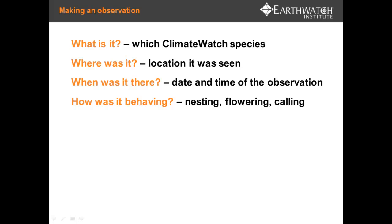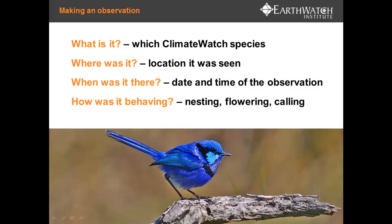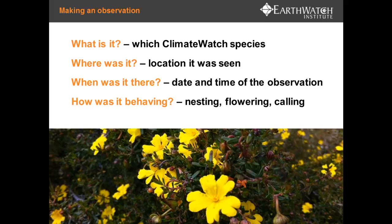When it comes to making an observation for Climate Watch, we essentially want you to answer four questions. What is it — which Climate Watch species have you seen? Where was it — you can mark the location on a Google map using the web interface, or grab the location automatically with the iPhone or Android app. When was it there — the date and time of the observation is crucial. And how was it behaving? For example, with birds we want to know when birds are nesting or when they're feeding their young. For plants, we're particularly interested in events like flowering, and in some cases for international species and some deciduous plants, when they lose their leaves.